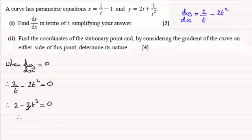Rearranging this then, 2 would equal 2t³. Divide both sides by 2 and you end up with t³ equaling 1. And if you take the cube root of 1 you end up with t equaling 1.